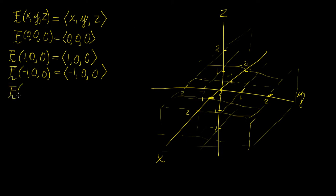Let's do something like (0, 1, 0) — you're going to get the vector (0, 1, 0). The really nice thing about this particular vector field is that any point that you choose is going to translate into a vector, so the vector components become the same as the coordinates of the point.